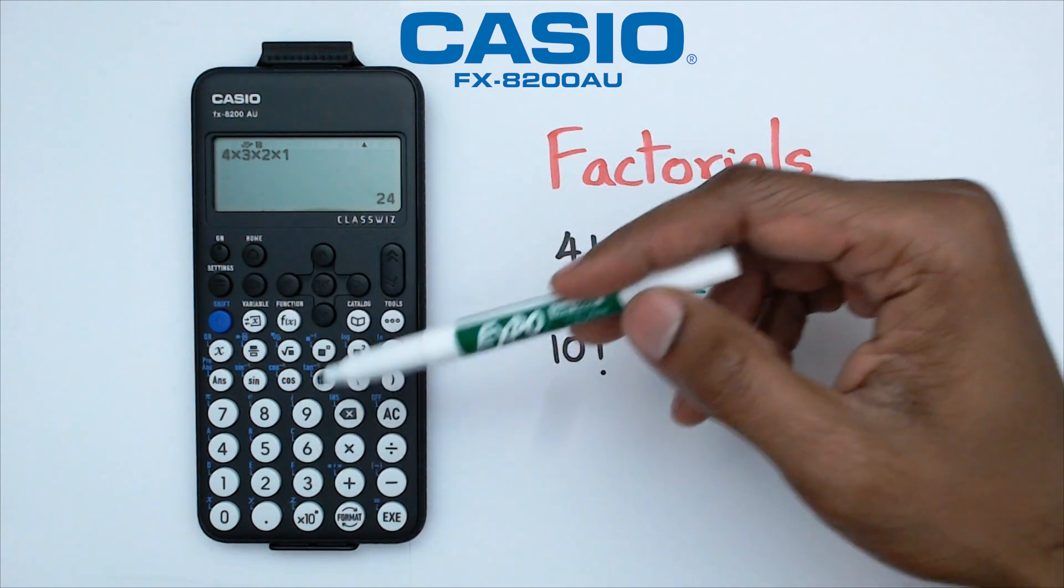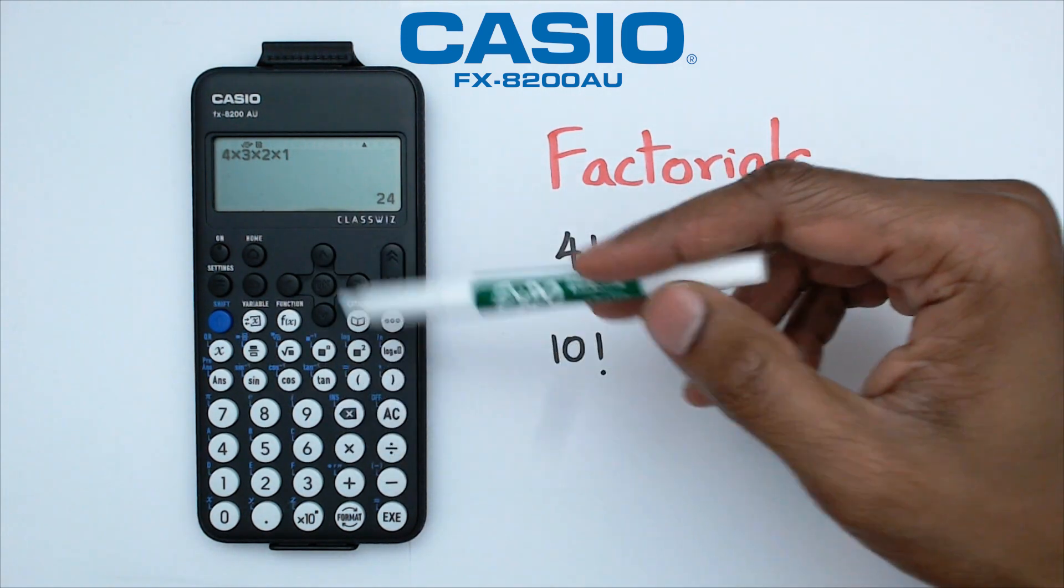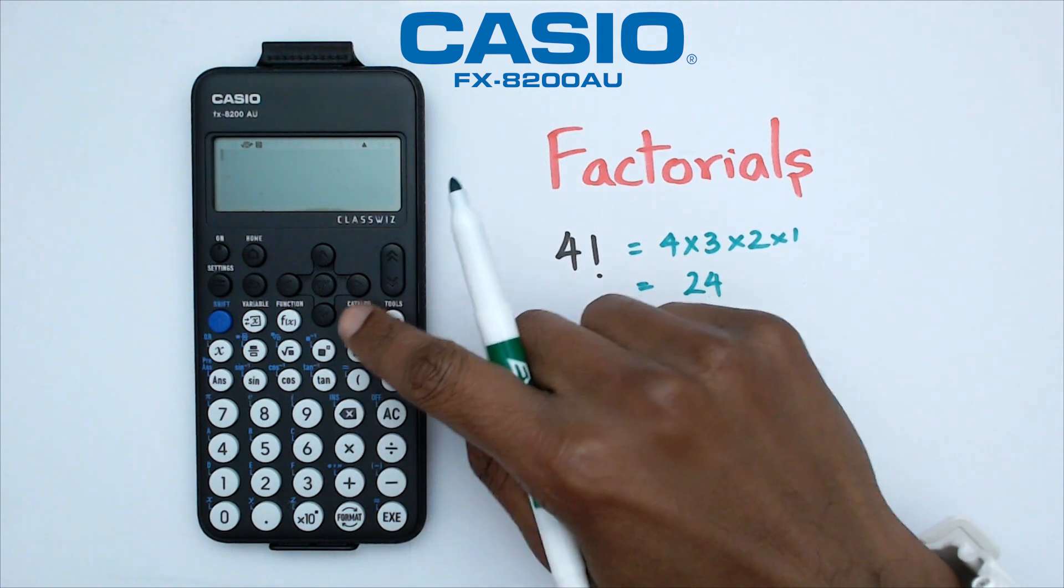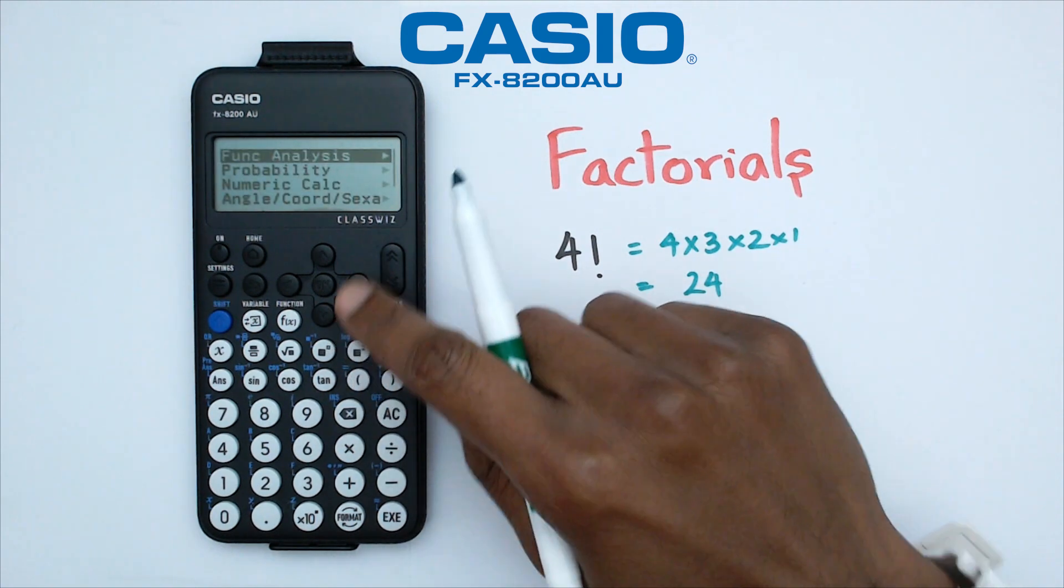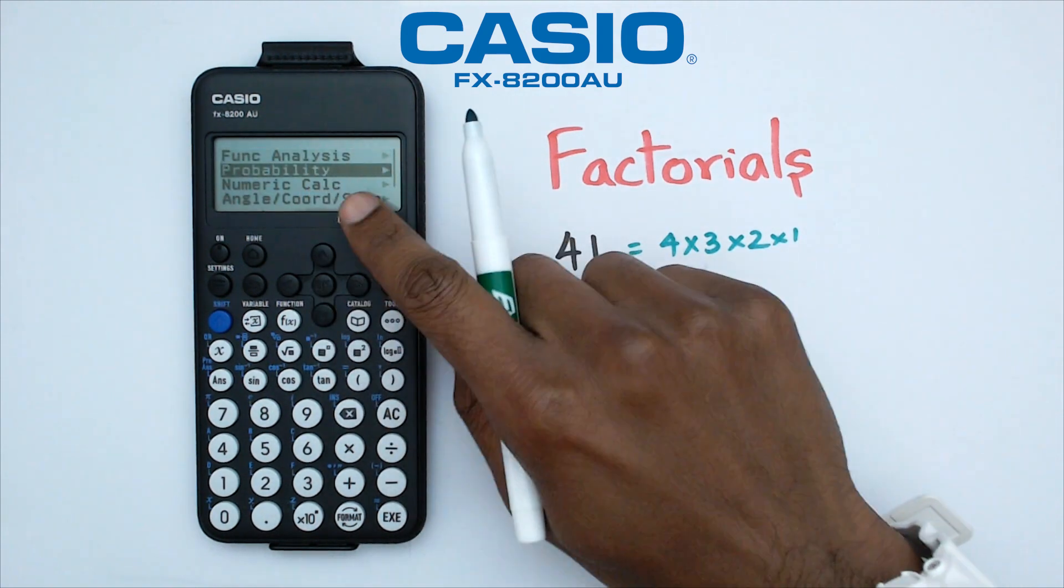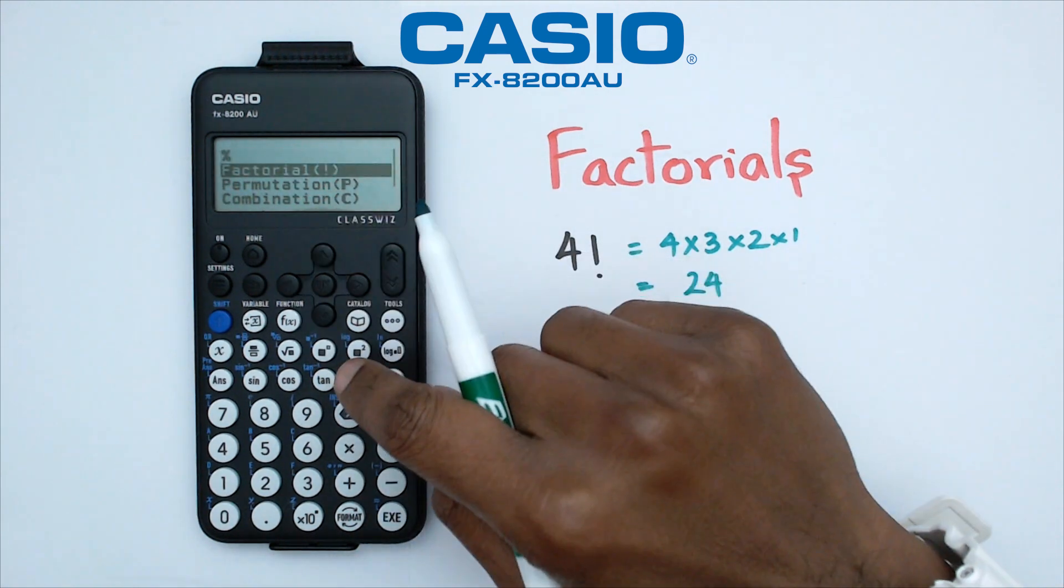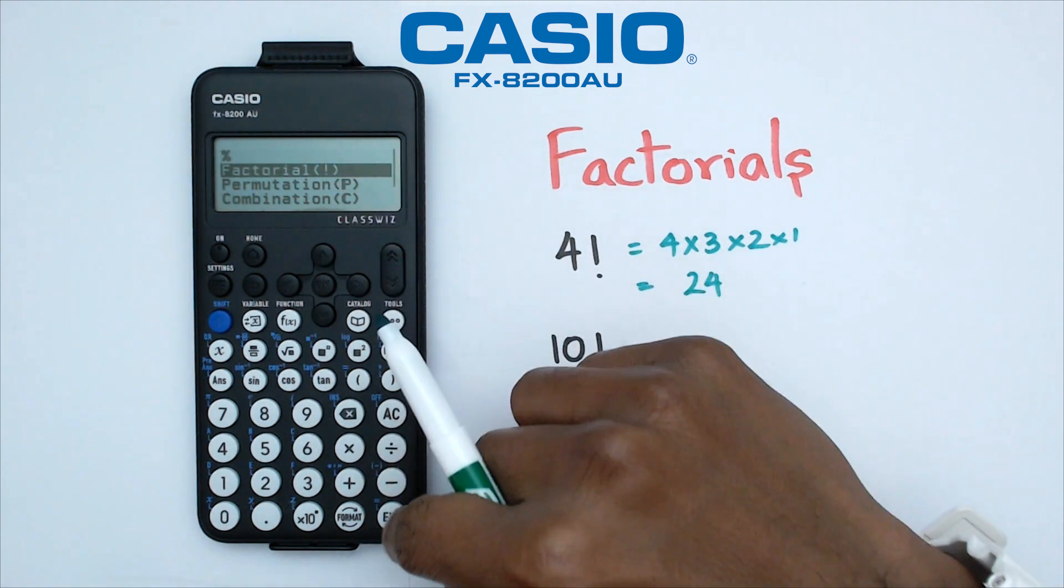Now when you actually look at the calculator, you're not going to find this exclamation mark anywhere. So to do this, we're going to go into our catalog menu. Click on catalog, go down to probability, press exe, and as you can see, you can see the factorial with that exclamation mark popping up.